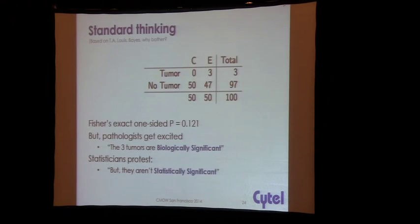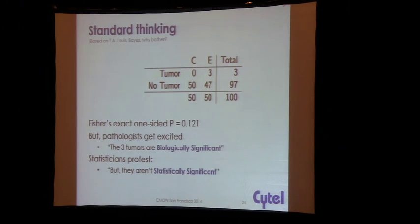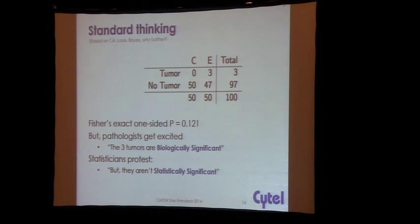Bayesian and adaptive are often put together, but that's not automatic. There are many methods that are classical frequentist methods that lead to adaptive designs. Bayesian methods, on the other hand, are naturally adaptive, which is why they're so associated with adaptive designs in people's minds. They're much more akin to the way we think, which is why they're also more appealing.